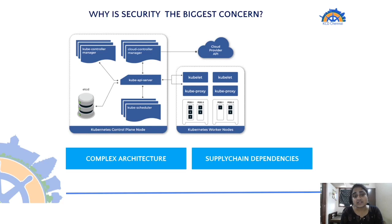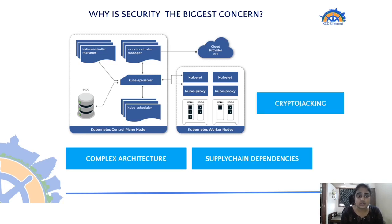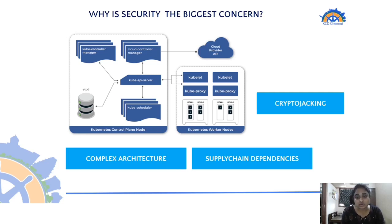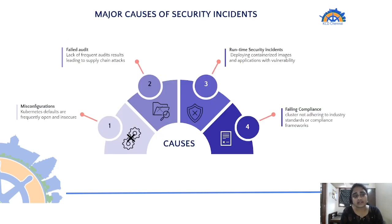Another reason security is a big concern is supply chain dependencies. For example, if you store secrets in etcd unencrypted and they are exposed, it can lead to a serious attack. Even a small misconfiguration can lead to a serious incident. Also, Kubernetes is a promising target — once an attacker gains control of the cluster, they can run crypto-jacking mining algorithms alongside your workloads, even naming them similarly to system components like CoreDNS so they go unnoticed.